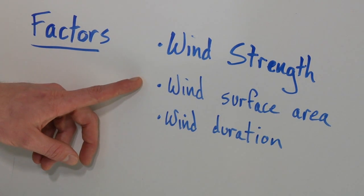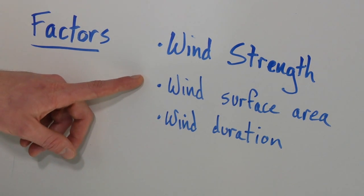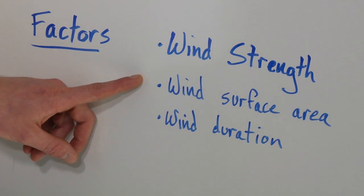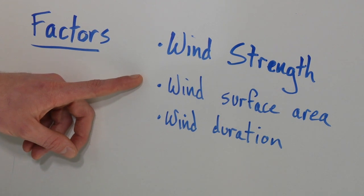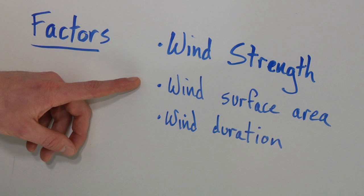Second, the amount of surface area that the wind can pass over. So maybe it's not the wind surface area as much as the surface area of the objects, so the water. With a larger area for wind to transfer energy, that's going to generate more waves.